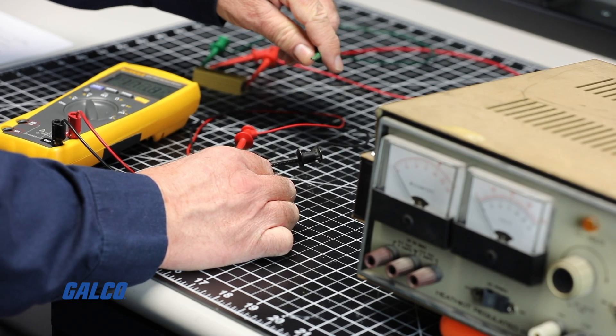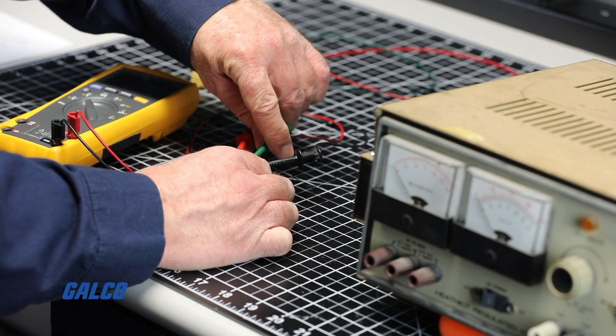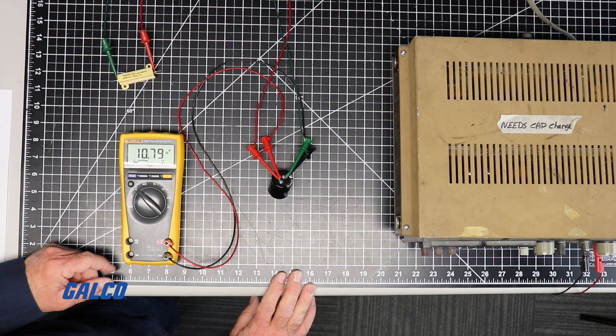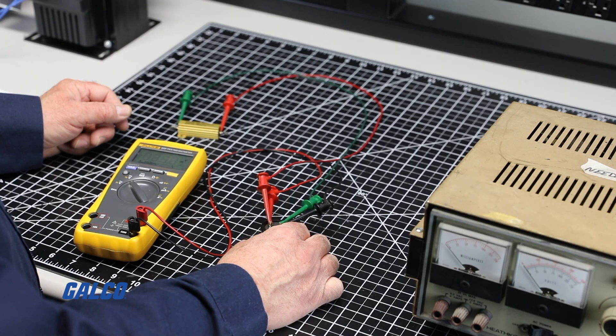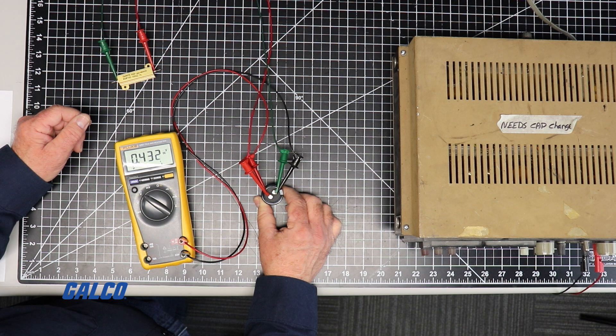Finally, connect the alligator clip test leads to each wire terminal of the capacitor. The voltage reading on the multimeter should immediately begin to drop. When the voltage reading drops into the millivolt range, or less than one volt, the capacitor is safely discharged.